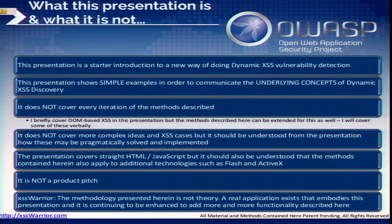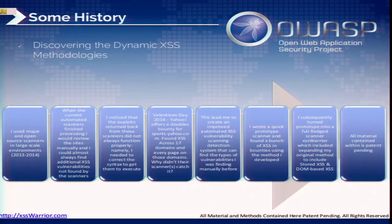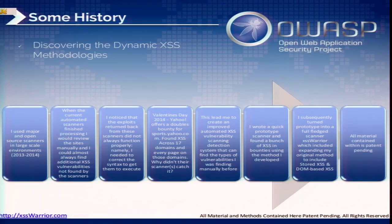The key is that these are not all the different methods — just the most simple ones to communicate the ideas and show how the existing ones are flawed. Here's some history about what happened. Basically, I was using a lot of scanners and would always find cross-site scripting manually after the automated systems had been running. I was curious to know why I was able to find stuff when the scanners weren't.